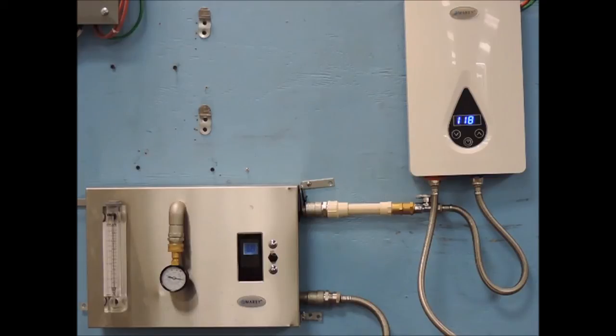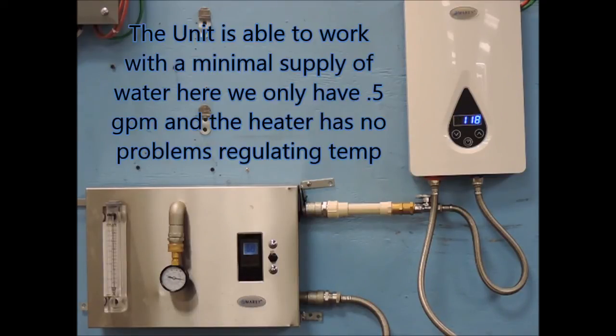As you can see here, our Eco 110 unit can operate with a flow rate of as little as one half a gallon per minute.